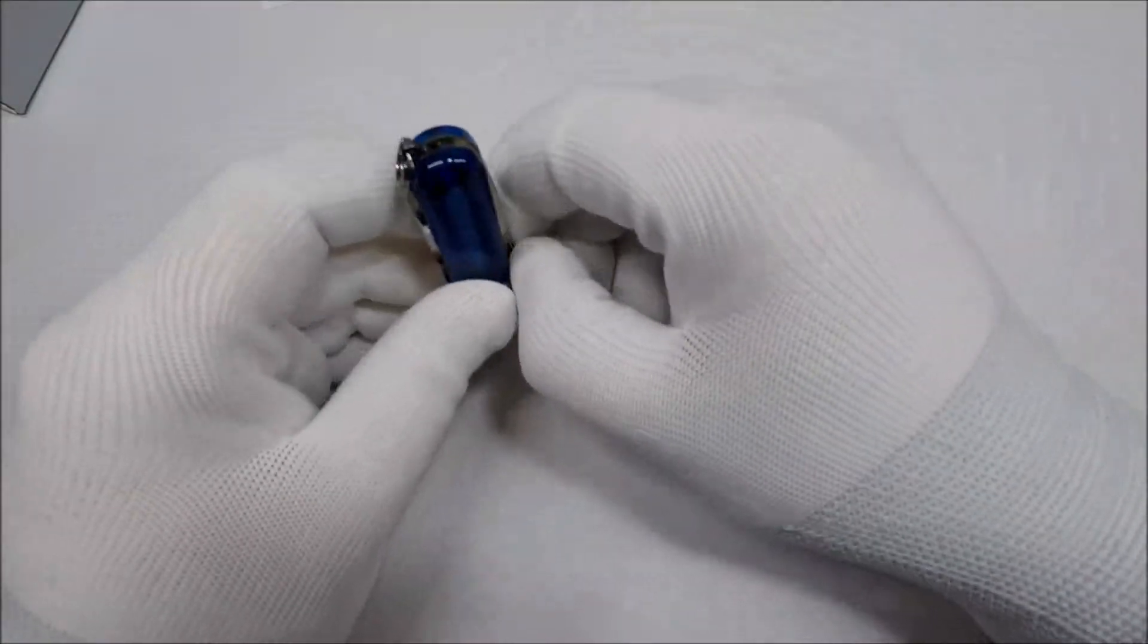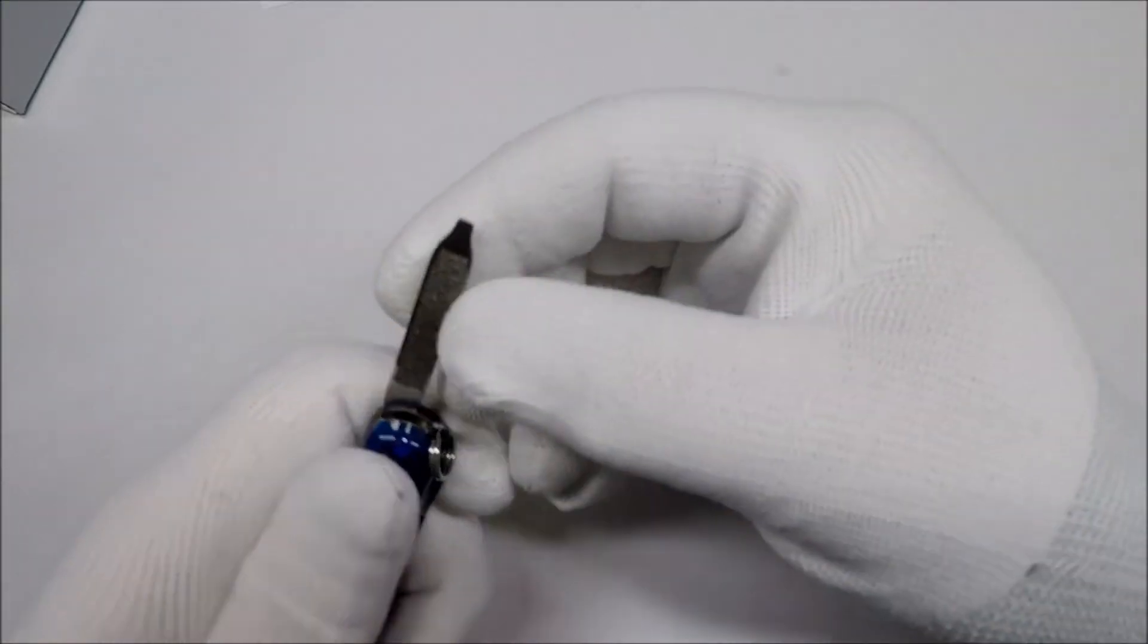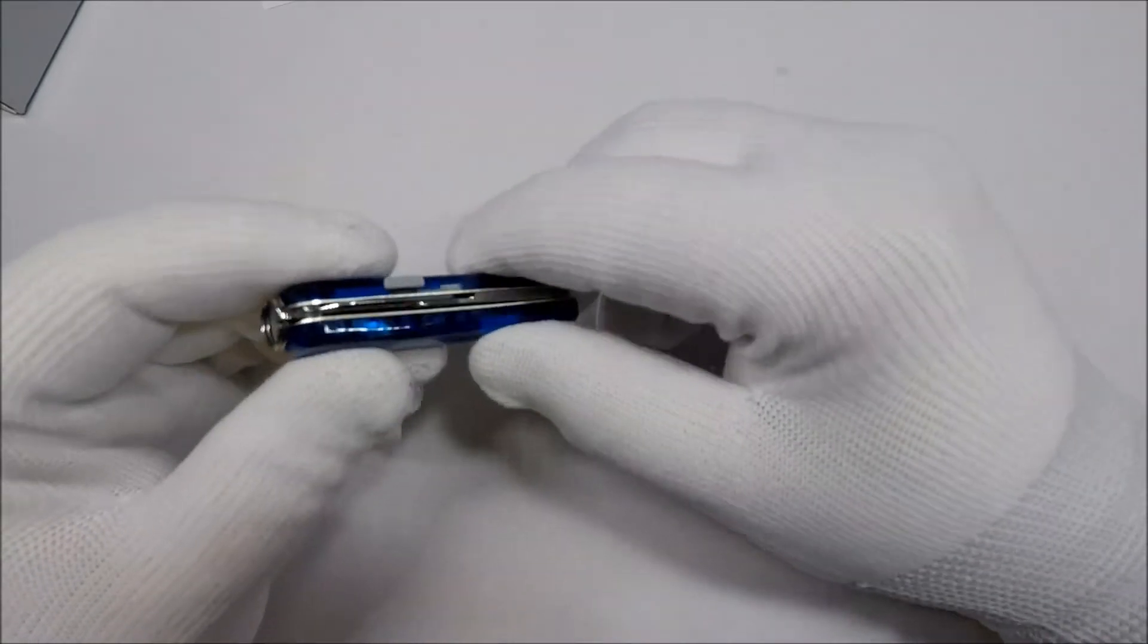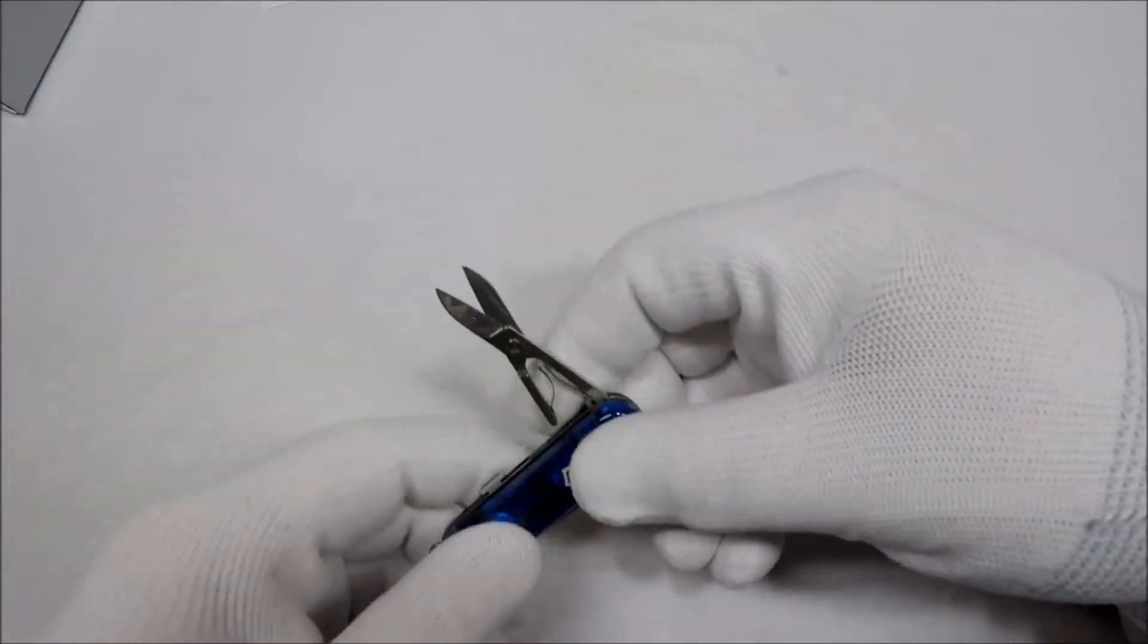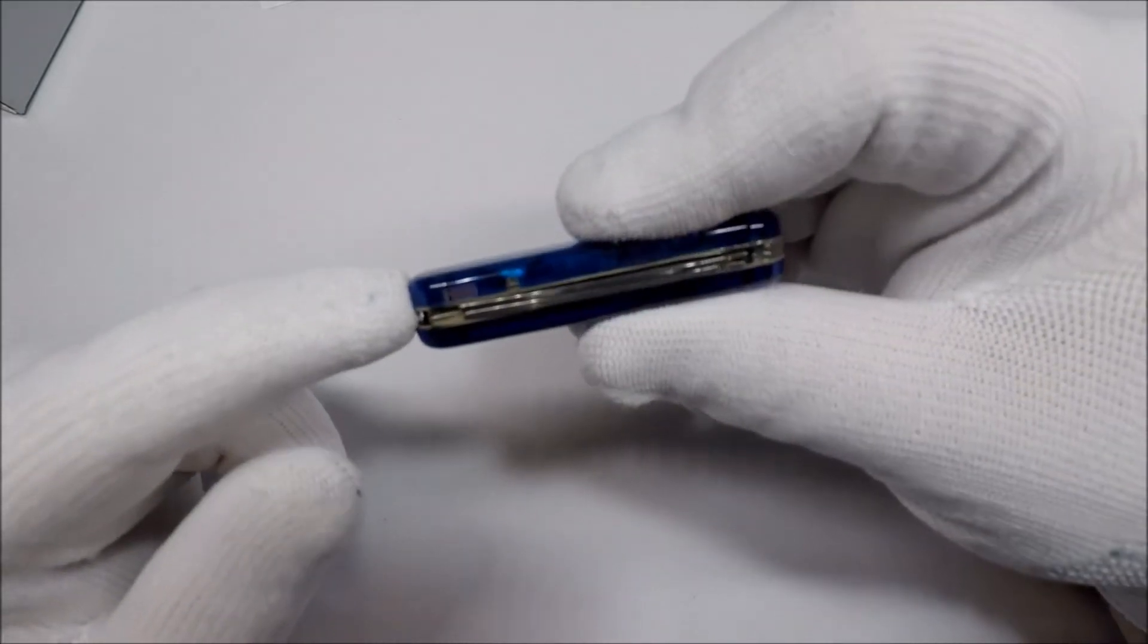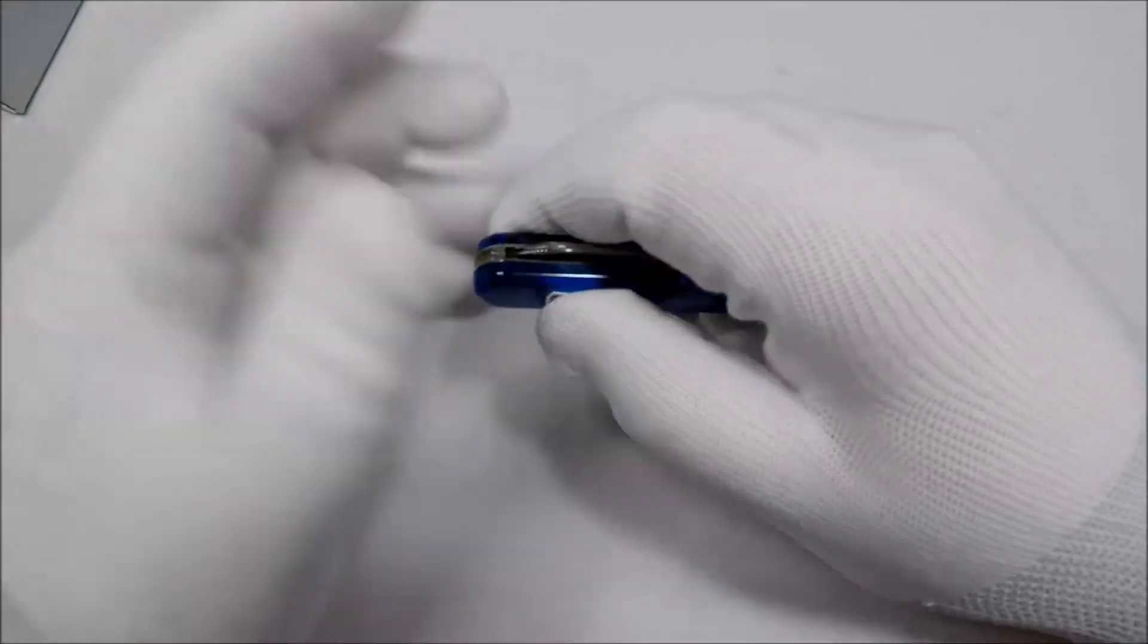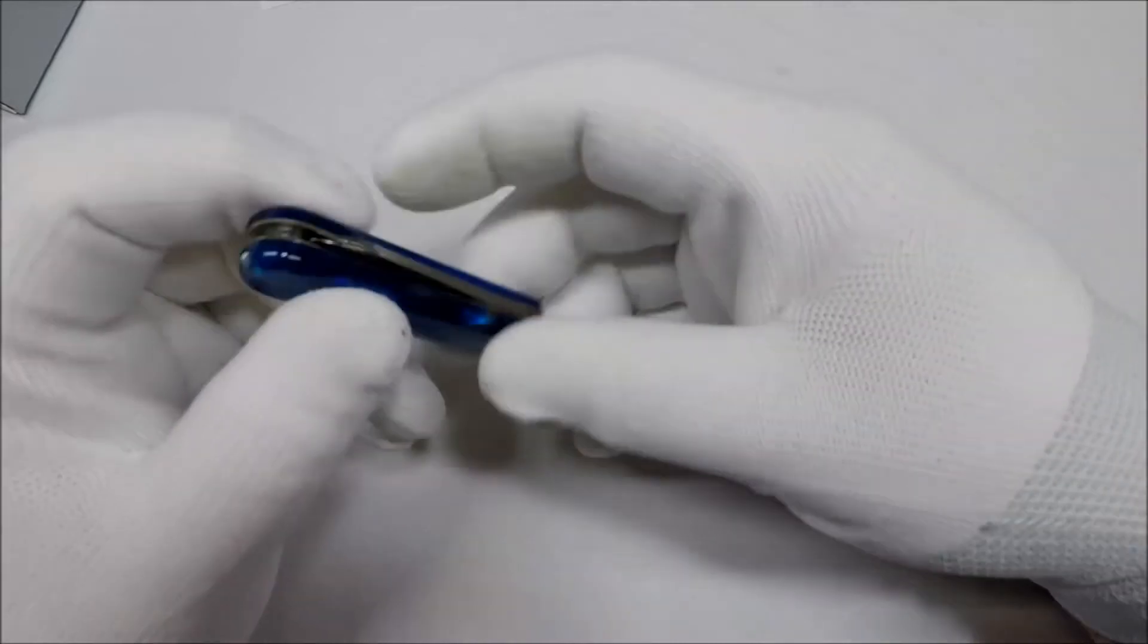It comes with a little nail file and a teeny tiny little regular screwdriver. And you have a pair of scissors on the other side. Now, the big difference between this and the Classic is this scale is slightly thicker because you have the flashlight, the LED flashlight parts in there. And you lose the tweezers and the toothpick.